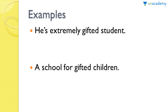Let's look at the examples. 'He's extremely gifted.' 'He's an extremely gifted student' — meaning his capabilities as a student are really good; he's excellent because he does all his work on time and studies well. 'A school for gifted children' — here 'gifted' can be used in different contexts, for example referring to those who are differently abled and also those who are very talented, for a special school for them. So it can be used in multiple contexts.